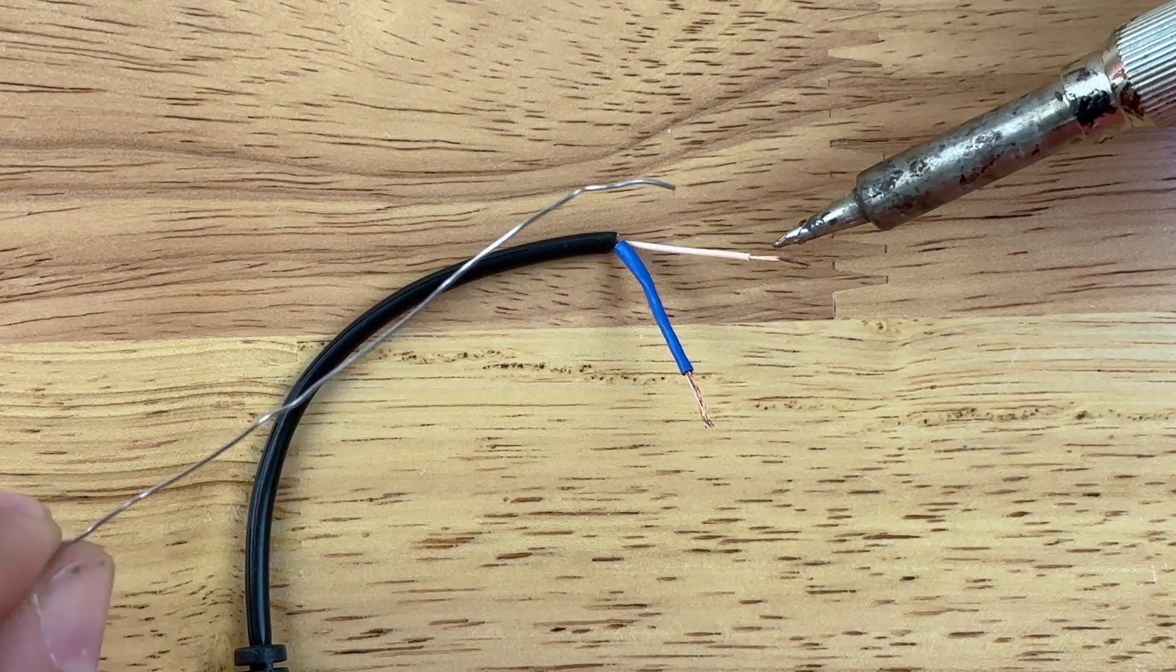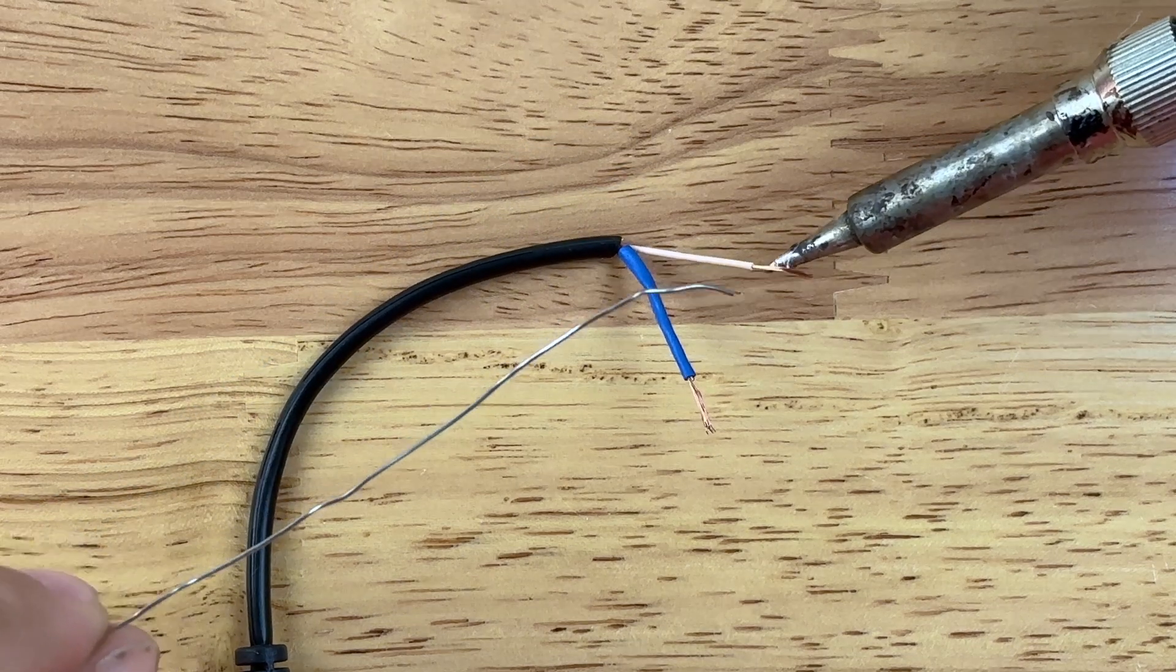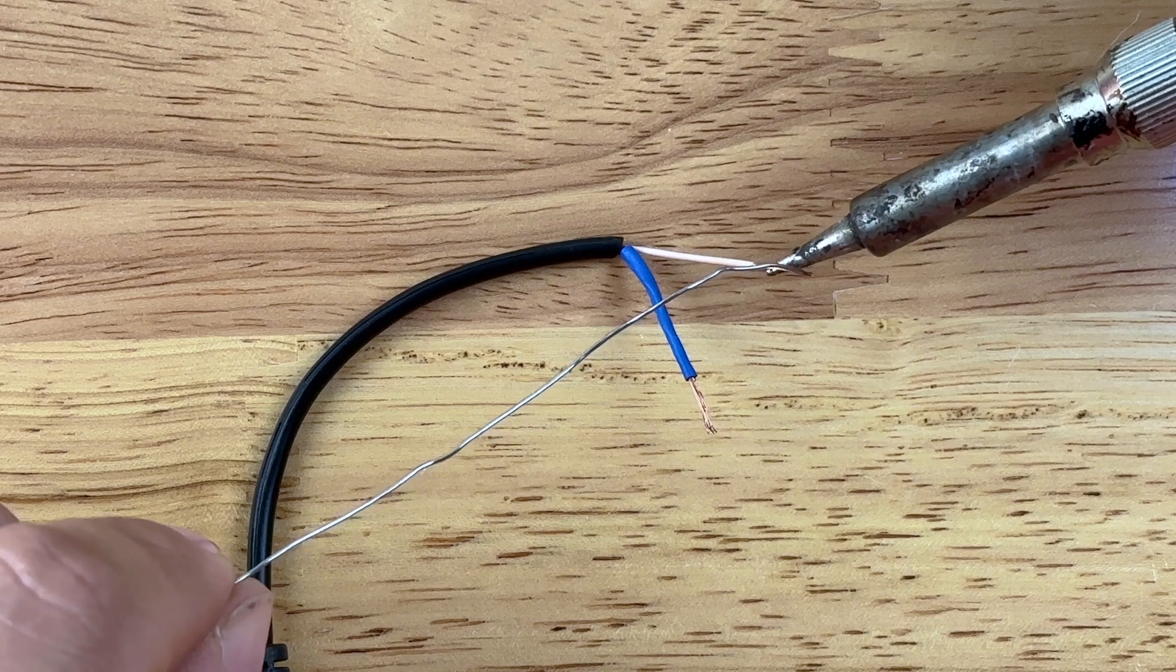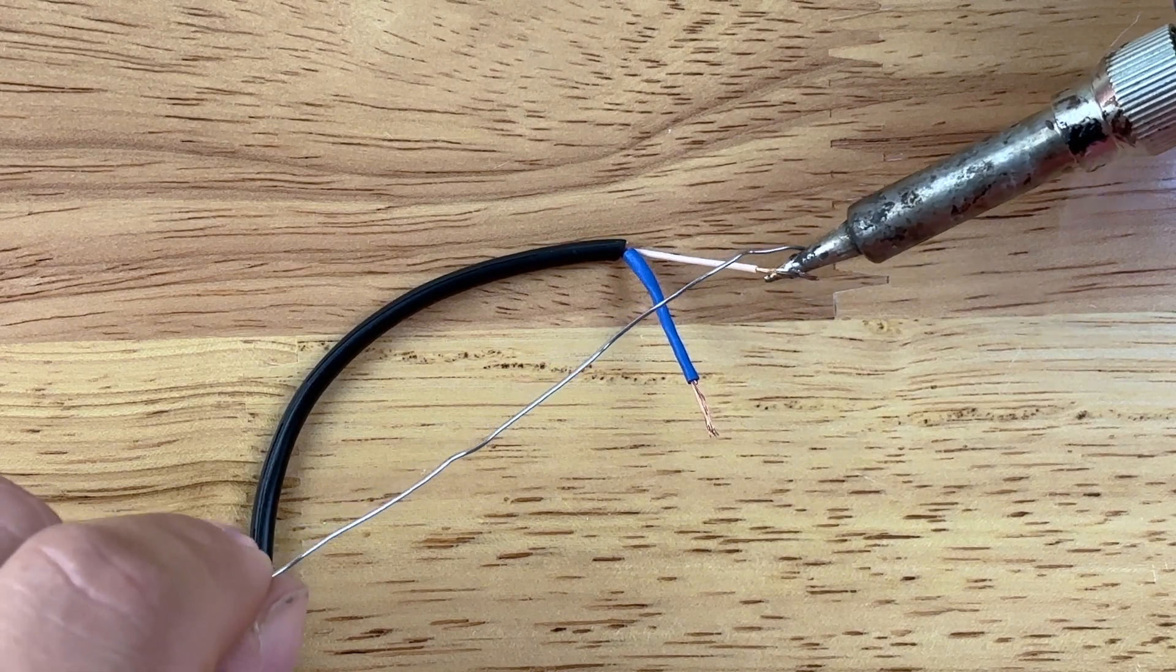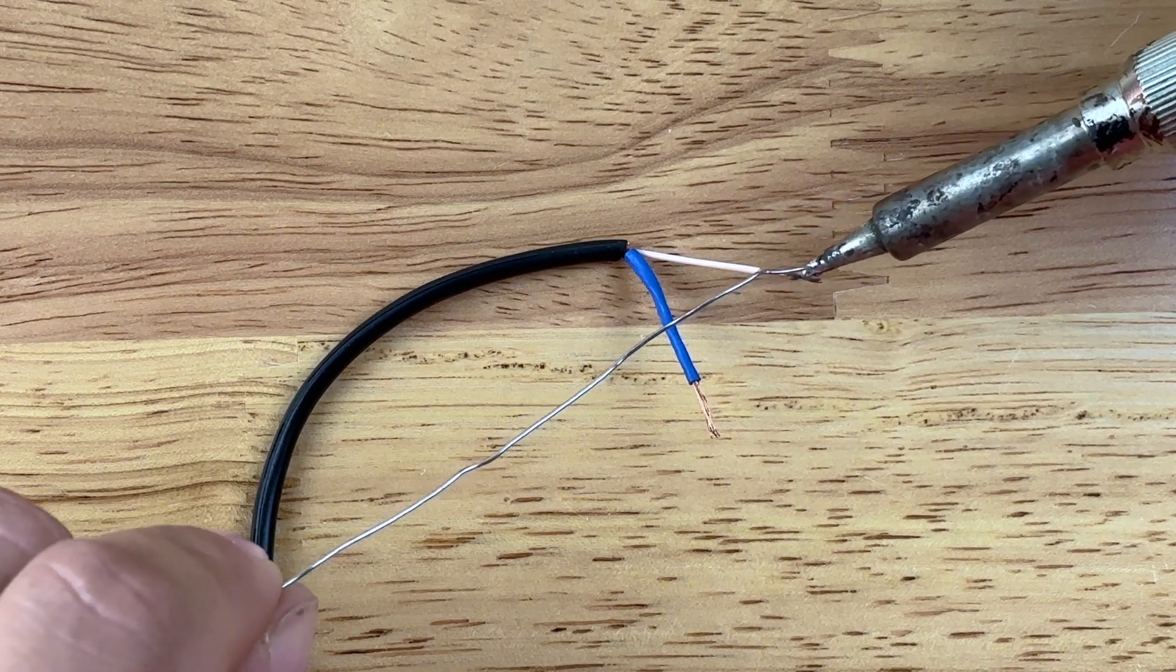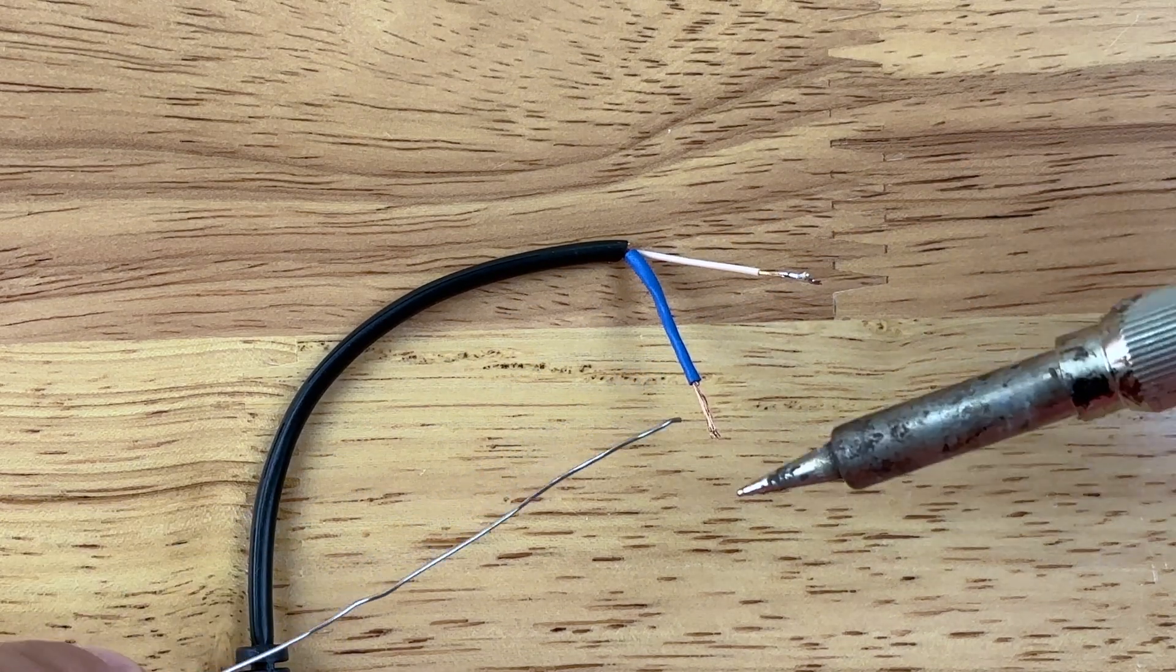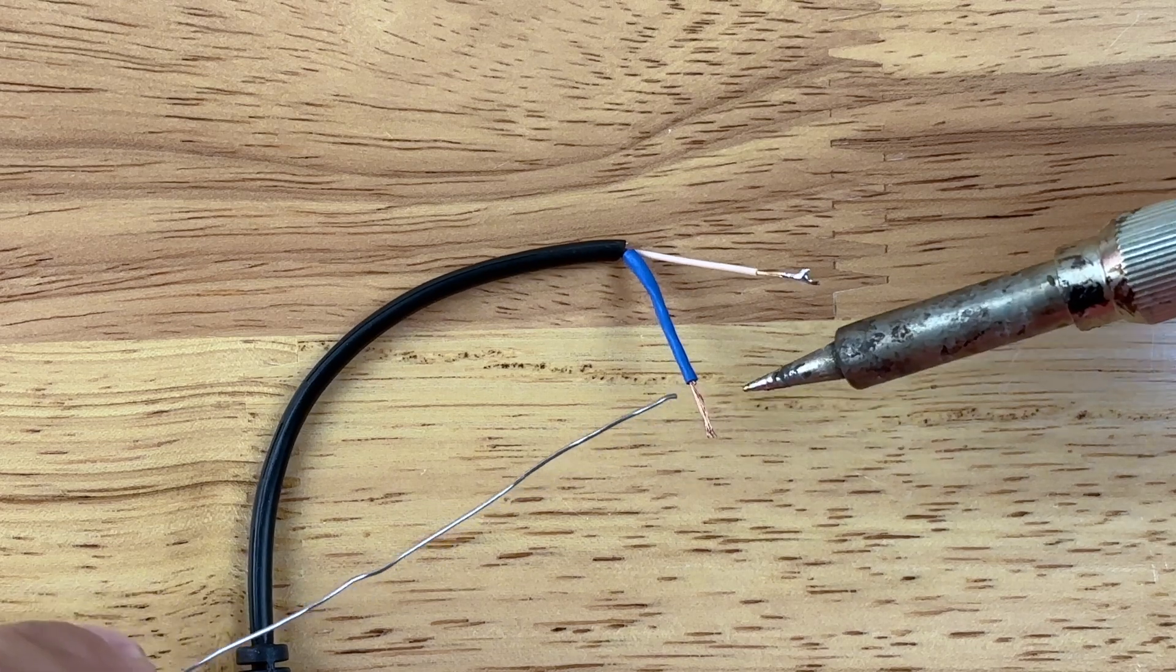So all I'm gonna do is bring my soldering iron down to my wire, and then bring the solder to it, and just try to get a good glob onto the wire. It does not need to look pretty, it just needs to have a good bit of solder on each of the wires.